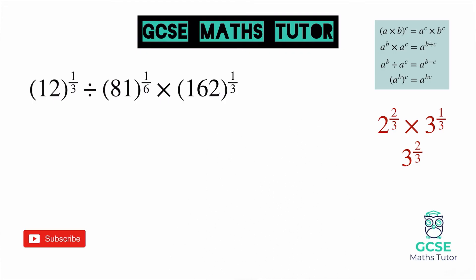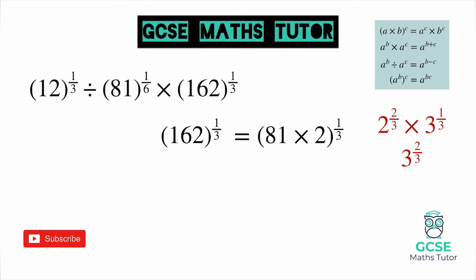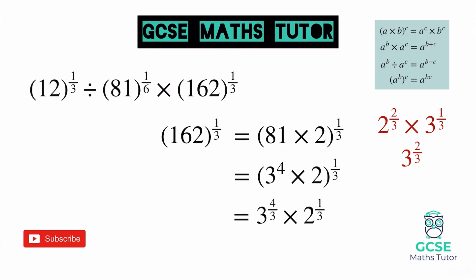The last number to look at is 162 to the power of a third. Taking the same approach: 162 is a multiple of 2 — it's 81 times 2. That's nice because we've already dealt with 81 and we know it's 3 to the power of 4. So writing 81 as 3 to the power of 4, we have 3 to the power of 4 multiplied by 2, all to the power of a third. Multiplying out the bracket using our laws of indices, the 4 becomes 4 thirds and the power of 1 on the 2 becomes 1 third. So we have 3 to the power of 4 thirds multiplied by 2 to the power of a third.